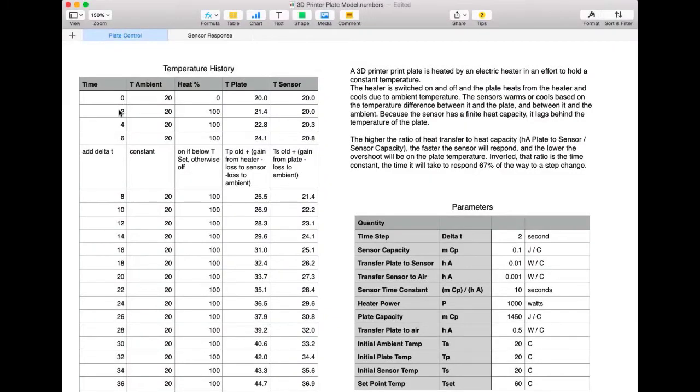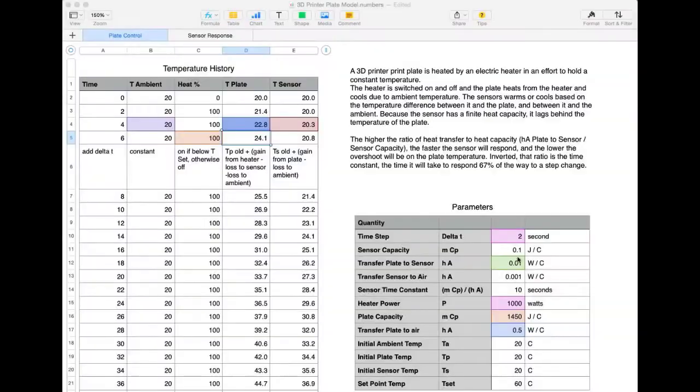For each time step as we go forward, we go forward by delta T each time. The ambient temperature is held as a constant. The heat is either off or on depending on whether the sensor is below or above the set point. The plate temperature is taken from the previous plate temperature plus any gain from the heater, minus any losses to the sensor which is colder than the plate, minus any losses to the ambient which is colder than the plate.